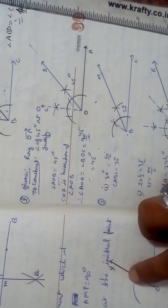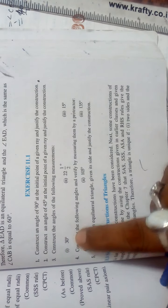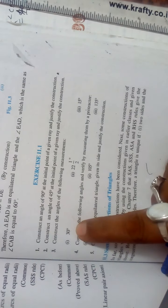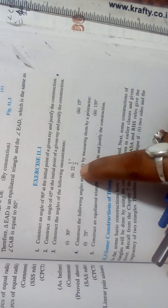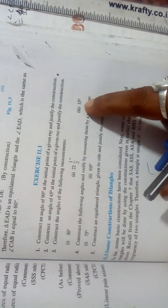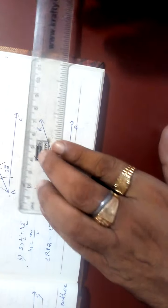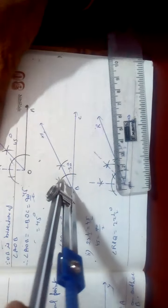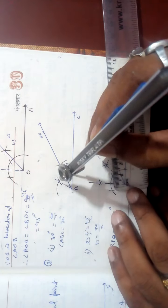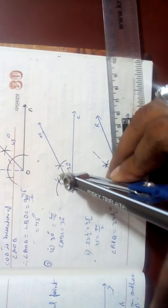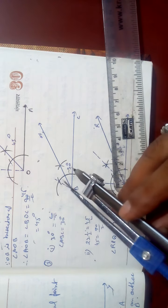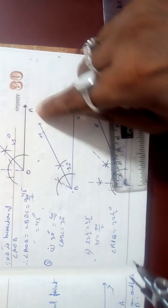Question 3: construct the following angles — 30 degrees, 22 and a half degrees, and 15 degrees. For 30 degrees: 30 is half of 60. Draw a line, at B first draw 60 degrees, then bisect it. With the same radius you can draw inside from 60 — you get 30 degrees. First one is done.